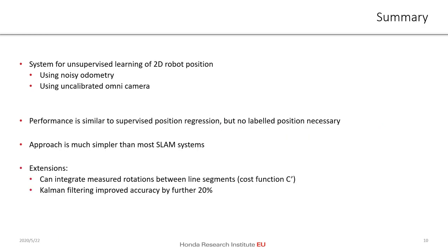We have shown a system for the unsupervised learning of 2D robot position from noisy odometry using an uncalibrated omnidirectional camera. The performance is similar to supervised regression, but it does not need any labeled training data. Also, the approach is much simpler than most SLAM systems. In the paper, we showed two more extensions. First, we can integrate the measured rotations between any two line segments, which improves convergence speed and reduces the risk of certain degenerate solutions. Second, we have shown that each image yields one independent position estimate, and we can gain a further 20% accuracy by integrating these estimates with odometry using a Kalman filter.